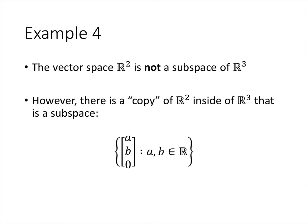Let's look at a couple of non-examples. The vector space R2 is not a subspace of R3, because it's not even a subset of R3 — elements of R2 have two entries while elements of R3 have three. However, there is a copy of R2 inside R3, which we can think of as the xy-plane: the set of vectors of the form (a, b, 0). We can prove that this set is a subspace using the same method as before.